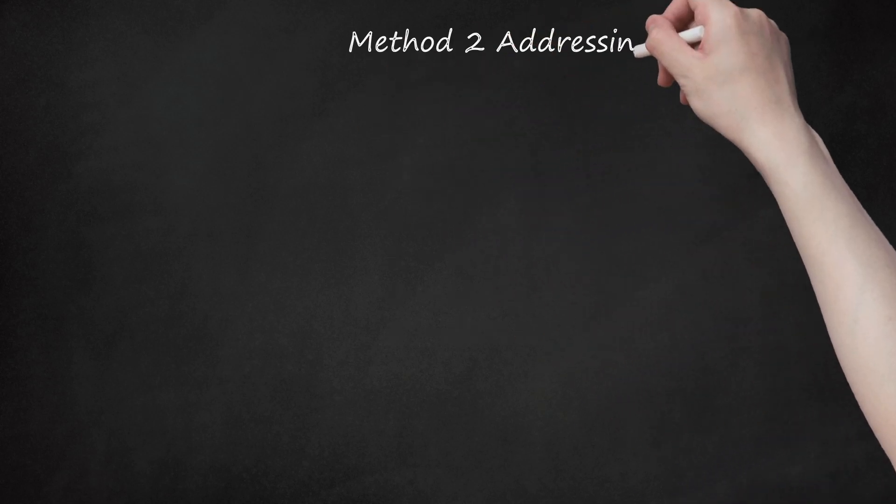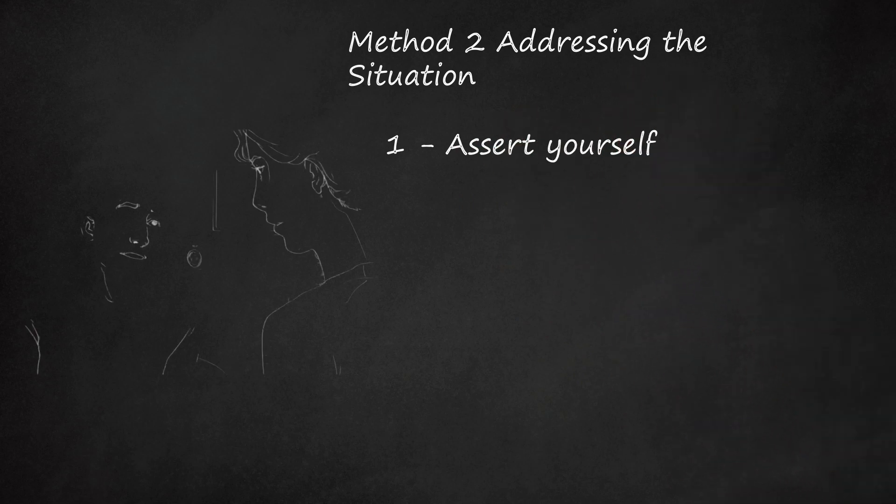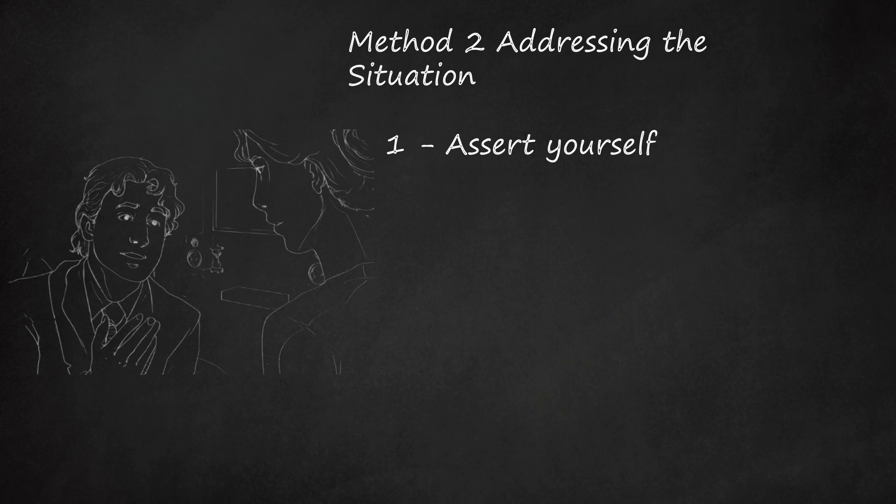Method 2: Addressing the Situation. One, assert yourself. You cannot put up with criticism indefinitely. Criticism can reach a point where it's no longer tolerable. It's one thing for your roommate to get on your case about taking the garbage out. However, some critical people begin giving unsolicited advice about your personal and professional life. In this case, you should assert yourself. Be firm, but also be kind. You do not want to be aggressive or disrespectful. This can escalate the situation and lead to an argument instead of a resolution.